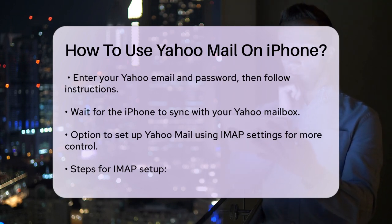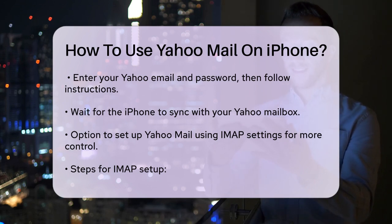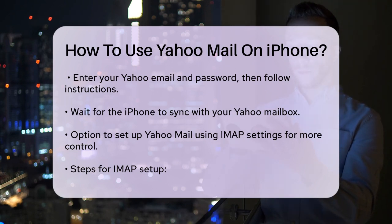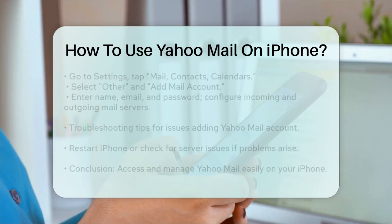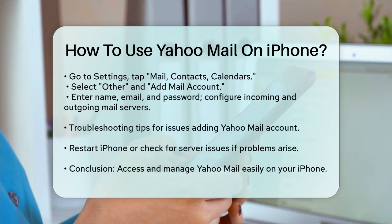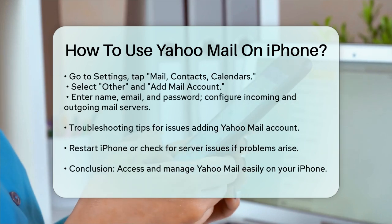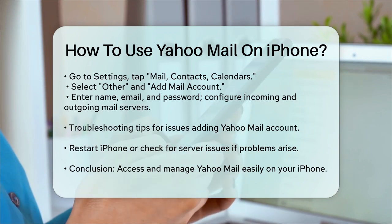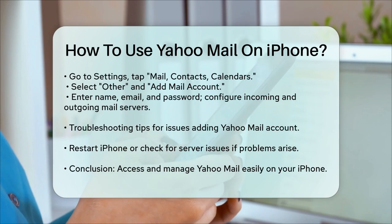Setting up with IMAP. If you're comfortable with a bit more technical setup, you can also configure your Yahoo Mail using IMAP settings directly in the Mail app. Go to Settings, then tap on Mail, Contacts, Calendars. In the Accounts section, tap Add Account and choose Other. Select Add Mail Account and enter your name, Yahoo email address, and password. For the incoming mail server, use imap.mail.yahoo.com as the host name, and for the outgoing mail server, use smtp.mail.yahoo.com. This method ensures you have full control over the email settings, but it's a bit more involved.